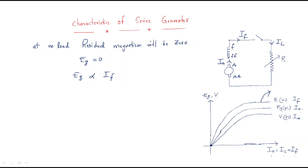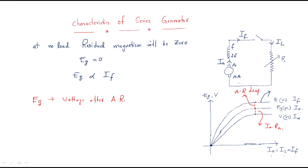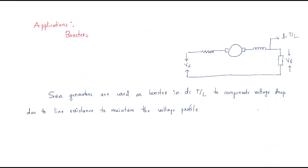On the Eg versus Ia graph, there are distinct regions. One region represents the armature reaction drop, and another represents the Ia × Ra (armature resistance) drop. The Eg curve — without considering armature reaction — and the V curve — after subtracting the armature reaction drop and the Ia×Ra drop — represent the key characteristics of the series generator.